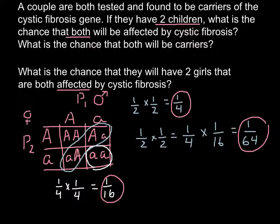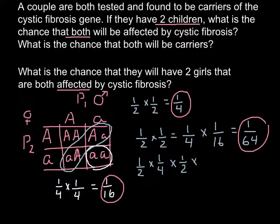By the way, there is one more way to solve the last question. What are the chances for the first child to be a girl? That is one-half. And what are the chances for this girl to be affected? That is one-fourth. So we multiply those. What are the chances for the second child to be a girl? One-half. And what are the chances for the second girl to be affected? One-fourth. So the answer would be the same — you just reached it by a slightly different path using logic.